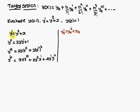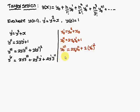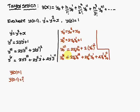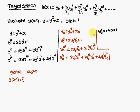Now, substituting x = x₀ and y = y₀ into all these expressions. Given y(0) = 1, we have x₀ = 0 and y₀ = 1. Substituting: y₀' = y₀² + x₀ = 1² + 0 = 1.